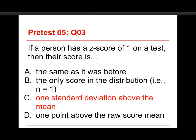Again, the same as it was before is true for the shape of a distribution when it's converted to a z-score. The only score in the distribution, n of 1, well, that's a case study. That's just a whole different thing. We don't even deal with that. And this one idea, one point above the raw score mean, that would be a deviation score of 1, but the z-score is not in deviations, it's in standard deviations.